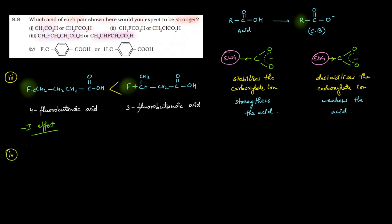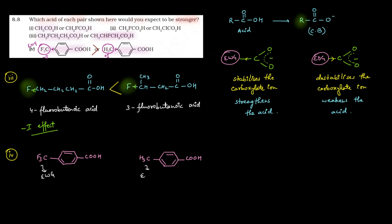In the last part, we are given two acids differing by their substituents: one has a CF₃ group and the other has a CS₃ group. CS₃ has a +I effect (electron donating) and CF₃ has a -I effect (electron withdrawing). The electron withdrawing group CF₃ stabilizes the carboxylate ion more, making that acid the stronger one. So the stronger acid is the CF₃-containing acid.